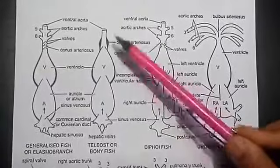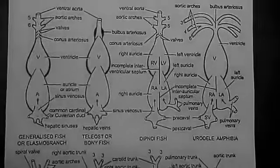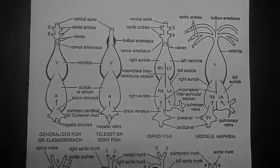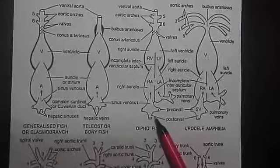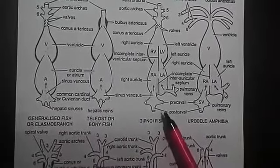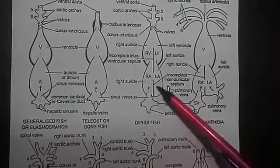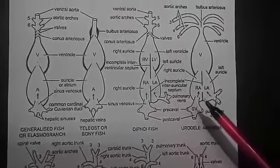Three-chambered heart is observed in dipnoi fishes, amphibians and reptiles. In dipnoi fishes, a septum divides the auricle into right and left chambers.